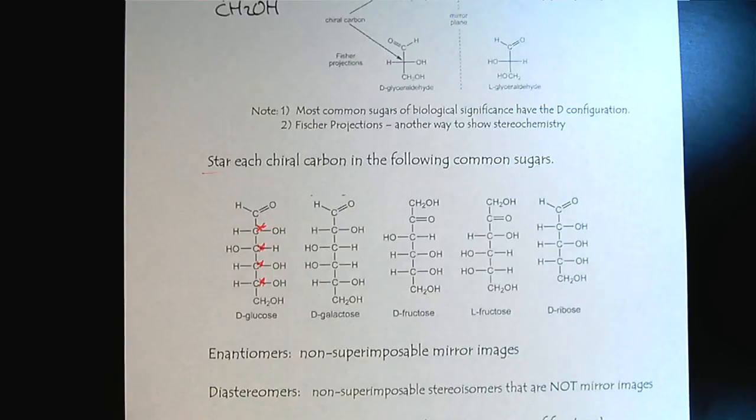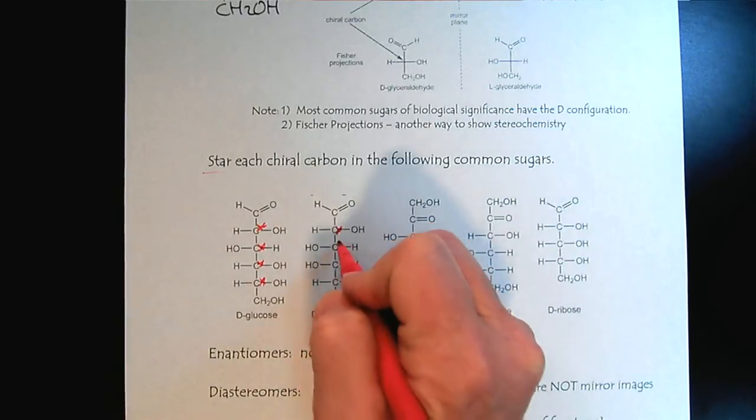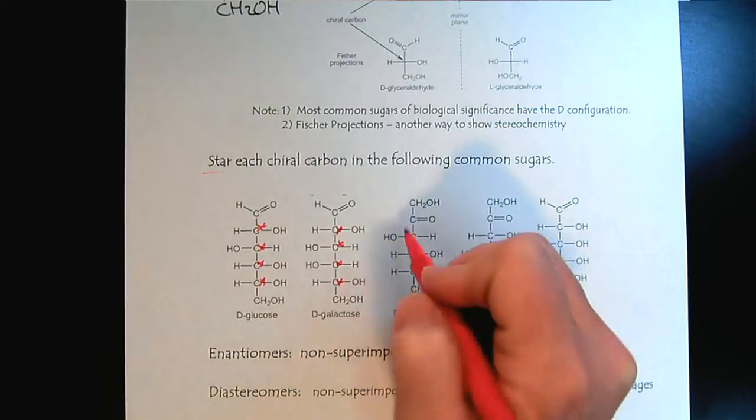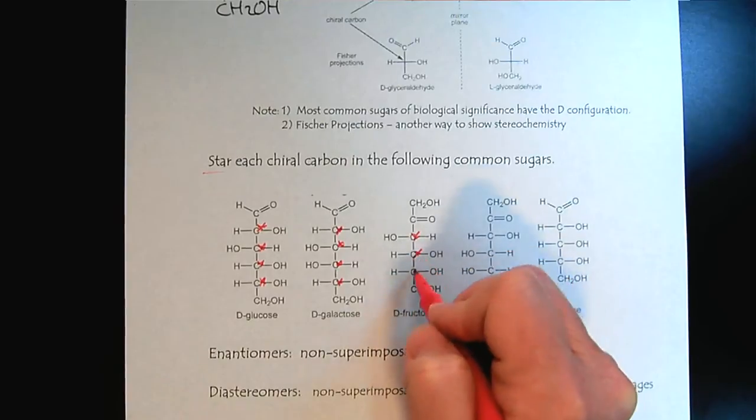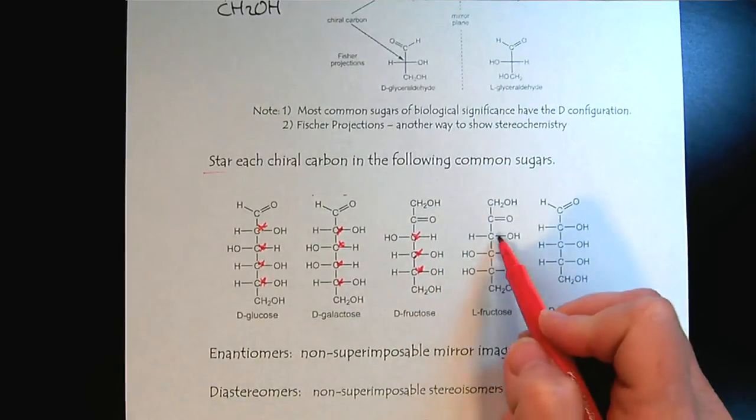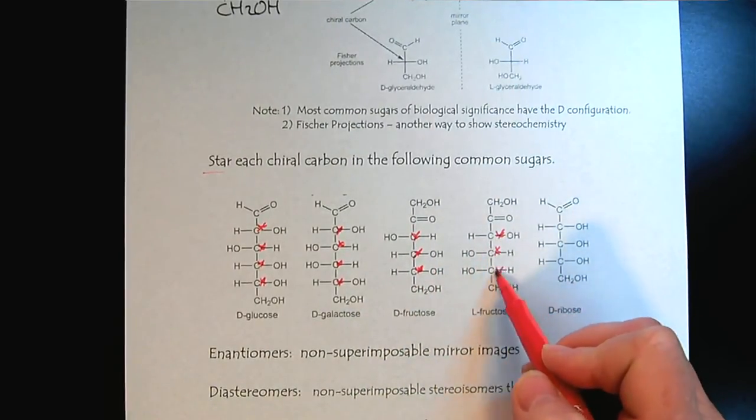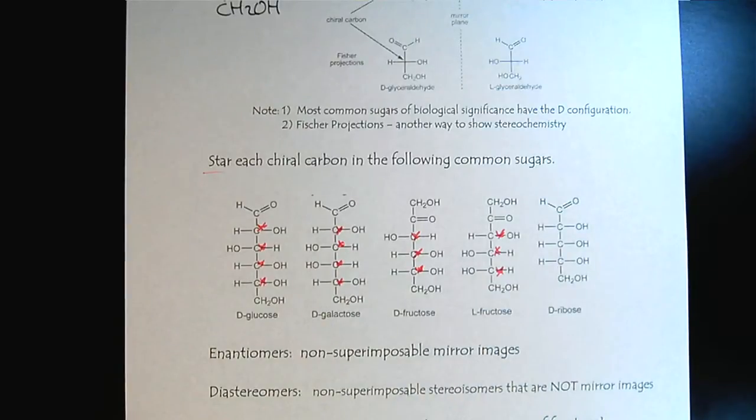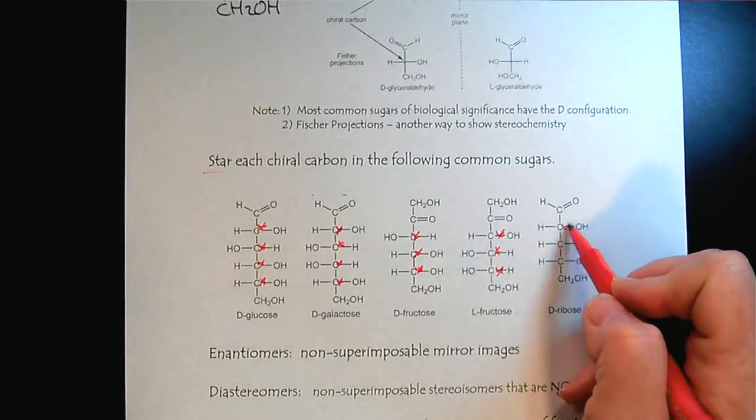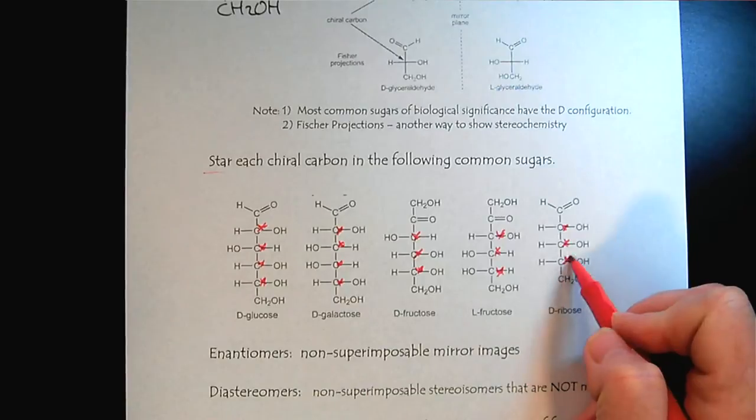So we can see that sugars have a ton of chiral carbons. We can star them. The ketoses tend to have one less because of the internal carbonyl. And then there's the riboses.